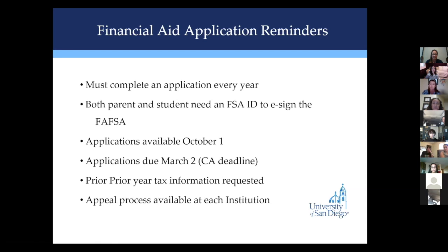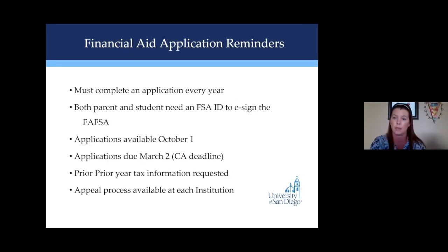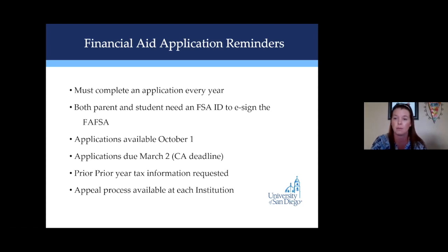A couple years ago, the financial aid industry had a huge shift in that we started using prior year tax data on the FAFSA — meaning the FAFSA is going to be asking for tax information from two years back. We realize that the financial situation in your family happening now may not be what was happening two years ago. Schools do have an appeal process, but that's at the school level. When you're inputting the information on the FAFSA, if what happened in 2019 is nowhere near what's happening in 2021, that's okay — but you're going to appeal at the university, not through the FAFSA. All schools do it a little differently, so you'll want to reach out to the university directly.